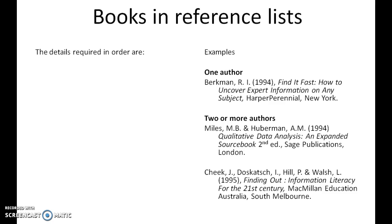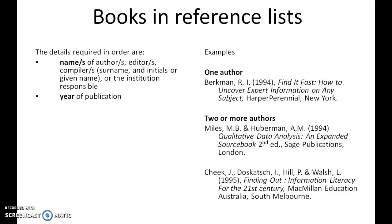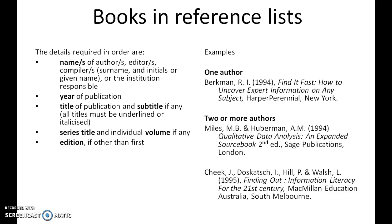For books in a reference list, the required information is: the names of the authors, editor, or institution responsible if it's a corporate author; year of publication in brackets; title of publication and subtitle — all titles must be italicized or underlined; a series title and individual volume if applicable; edition if anything other than the first; the name of the publisher; and the place of publication.